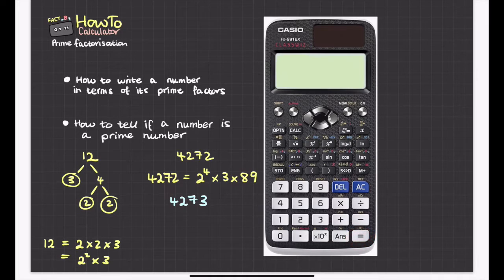Press the equals button. Then you can press shift and then the button with fact above it. And that gives me, it just gives me, it takes me back to exactly where I started. It says that this, as a product of its prime factors, is just the same. So that means that that number is a prime number.